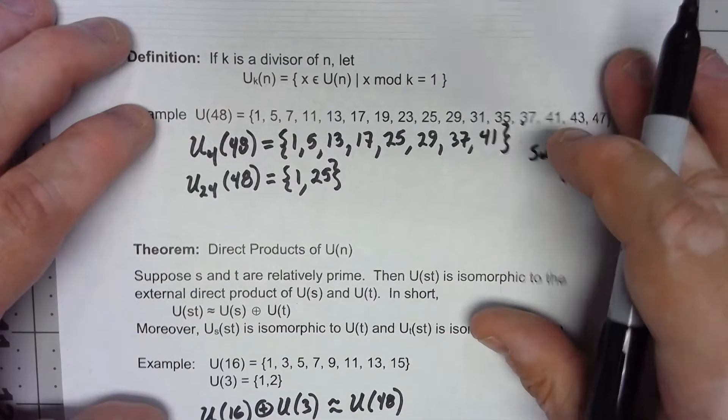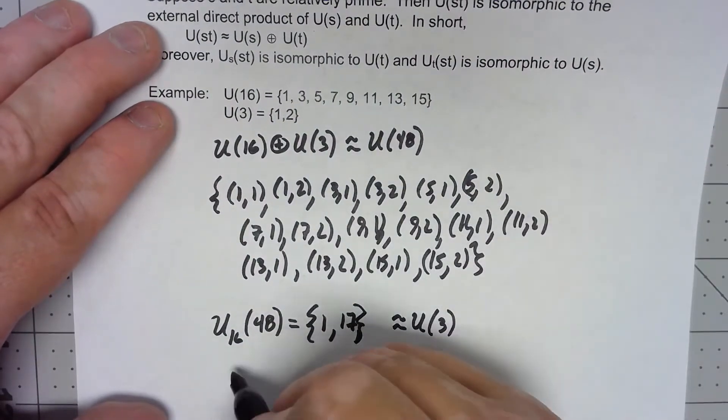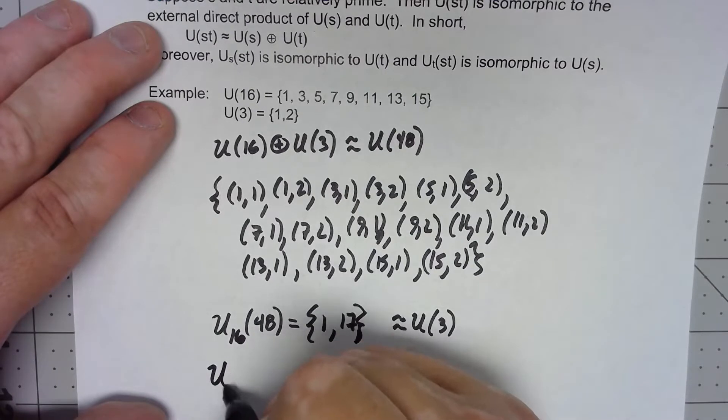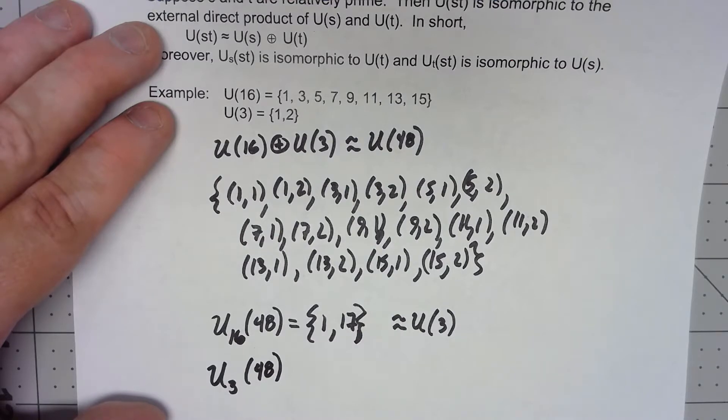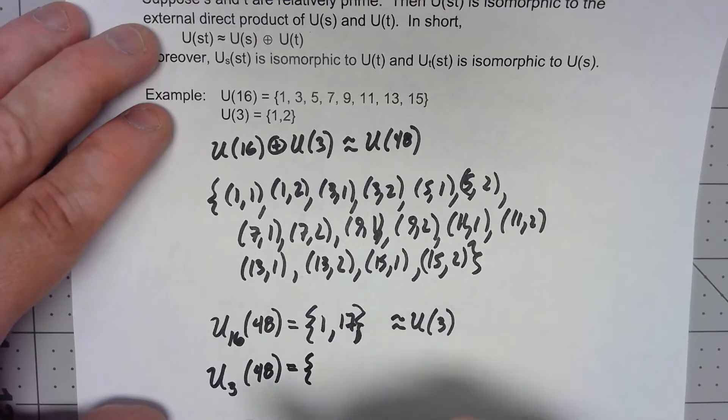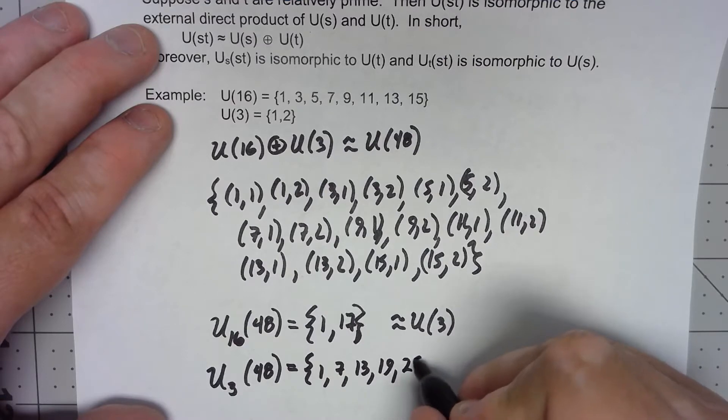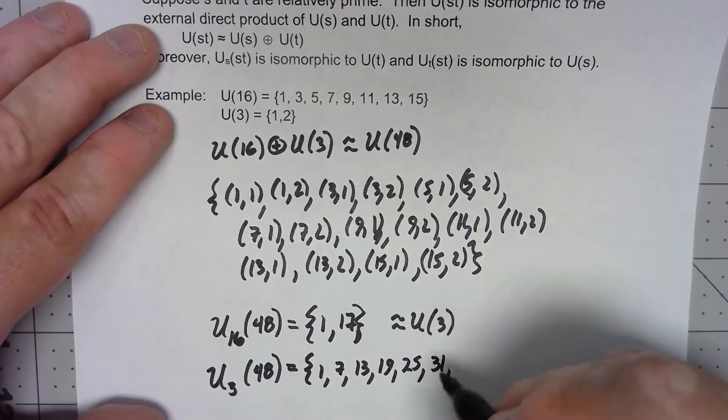Now a little tougher would be what about U_3(48)? Okay so we need to look at all the elements of U(48) that are a multiple of 3 plus 1. So we'd have 1, 7, 13, 19, 25, 31, 37, and 43.